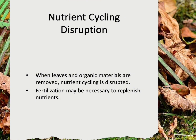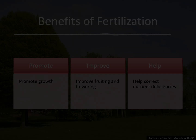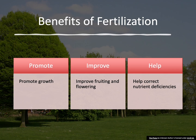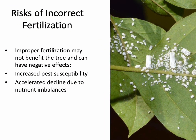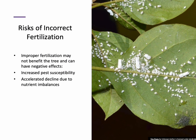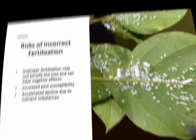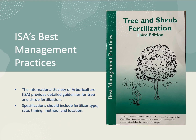When we rake leaves and dispose of organic material, we interrupt the natural nutrient cycling process. In these cases, fertilization may be necessary. Fertilizing can increase growth, improve flowering and fruiting, and slow decline from nutrient deficiencies. However, moderation is key — if not needed or applied correctly, it can harm the tree. Fertilizer misuse can increase susceptibility to pests and accelerate decline. Nitrogen, for example, can cause a tree to divert energy to growth rather than defense.